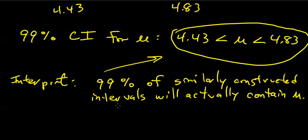We are at about the 26-minute point, so I'm going to call it a day. This concludes Online Class 13, Section 7.3, Estimating Population Means with Sigma Known.